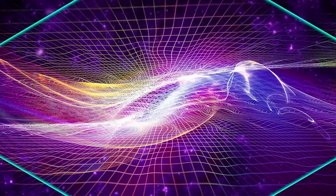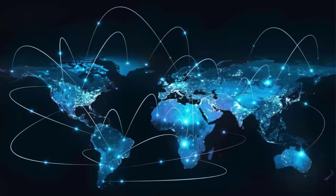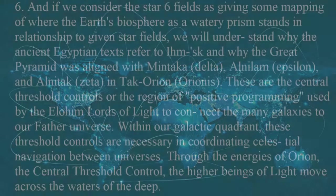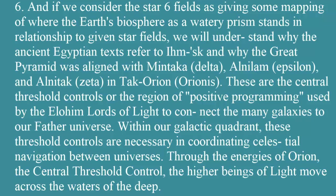It's saying that if we can understand how the star fields are ordered, then we can understand the analogy it's making. You have to use the analogy to understand the star fields. You'll start to understand that these are the central threshold controls of the region of positive programming used by the Elohim lords of light to connect the many galaxies to our father universe. Think of it as a watery prism — but instead of H2O, what's flowing is electrons.